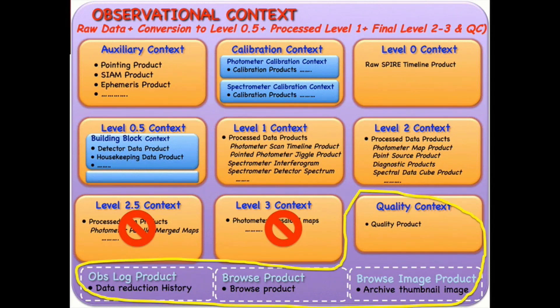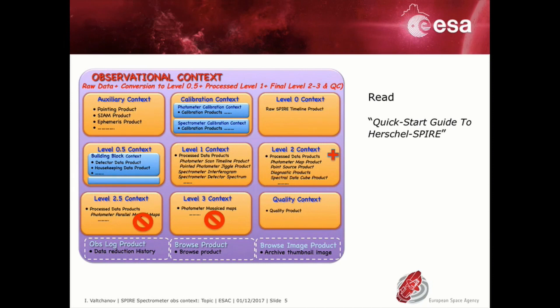The quality control information is also part of the observational context as well as some other useful products like the browse image also known as the postcard image. All the products at level 2 are science ready with some caveats which are explained in detail in the quick start guide to Herschel SPIRE.